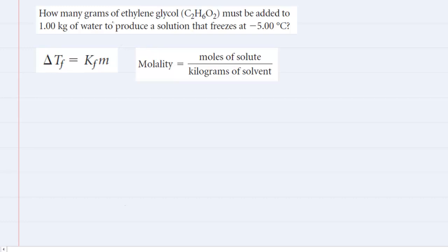In order to determine the number of grams of ethylene glycol (C2H6O2) that must be added to a kilogram of water to produce a solution that freezes at negative 5 degrees Celsius, we first want to consider the change in freezing point equation. It's important to understand that a change in freezing point is equal to the normal freezing point of the pure solvent, which we will identify in just a moment, minus the freezing point of the solution.